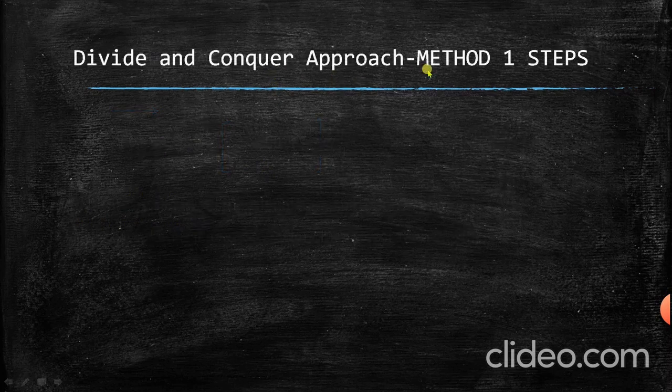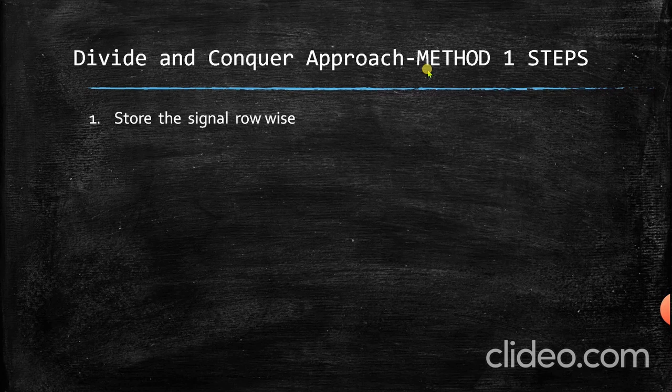Now let us see the steps required for finding the DFT of the given input signal using the divide and conquer approach. The first step is to store the signal row-wise. As already mentioned, if we consider the input signal as row-wise, then the resulting transformation signal should be considered as column-wise. In this video, I am considering the input signal as row-wise, so the output transformation signal will be considered as column-wise.